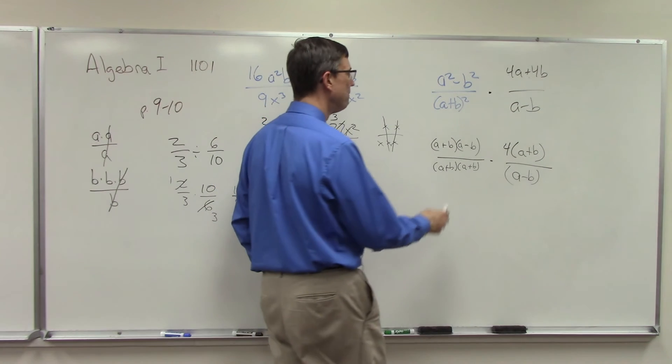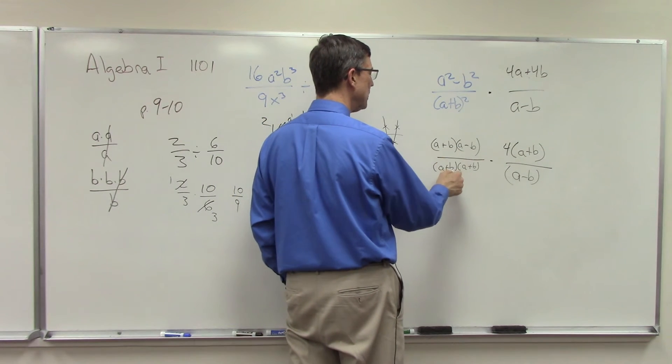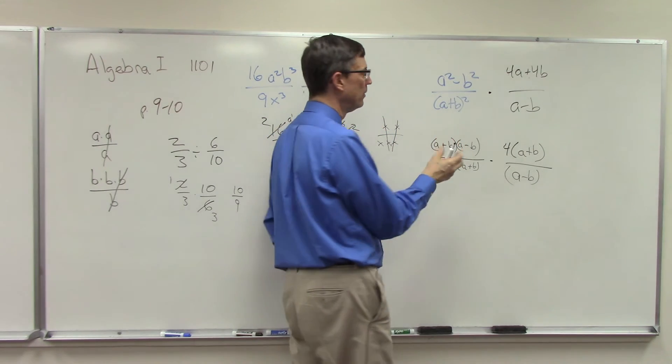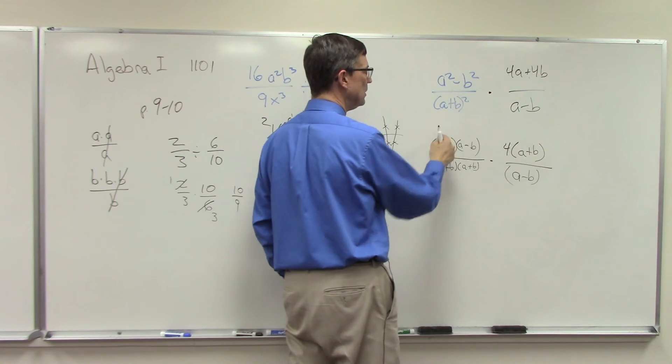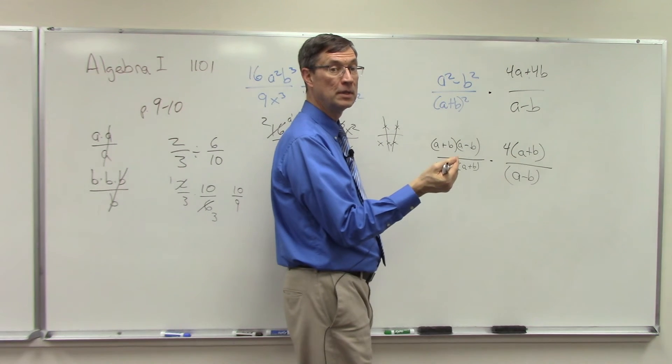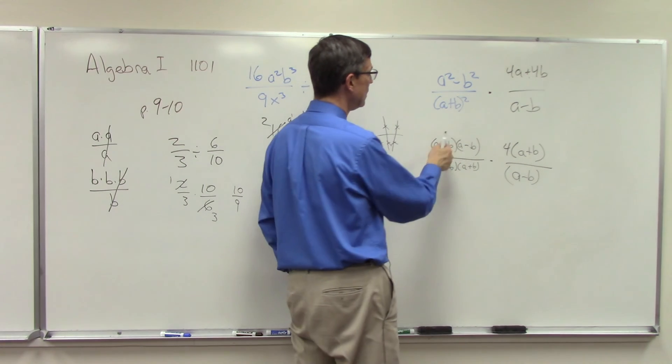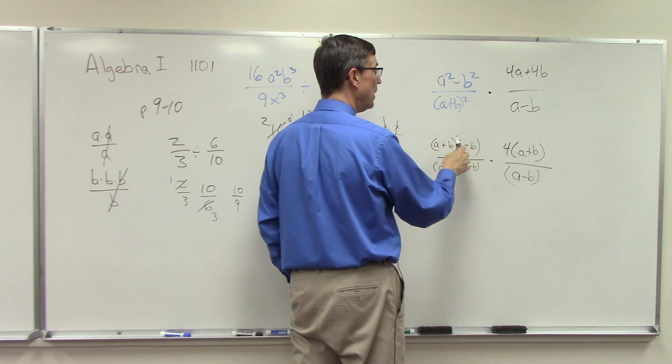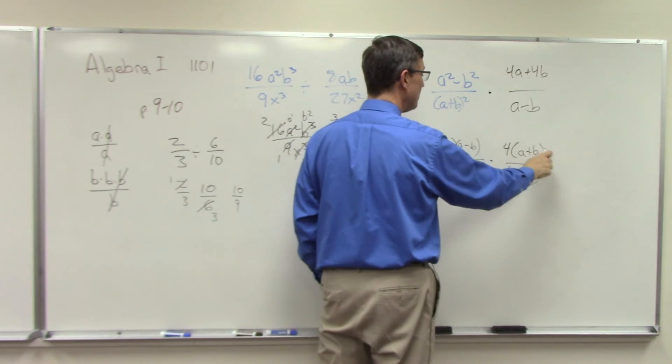We're not canceling a·b against a·b. We have to cancel factors—things that are being multiplied together. So this in parentheses is a protected quantity, so it is a factor all by itself. This is another factor, same here, same here. But now I can look at this entire top and see I have an (a + b) here that will cancel.